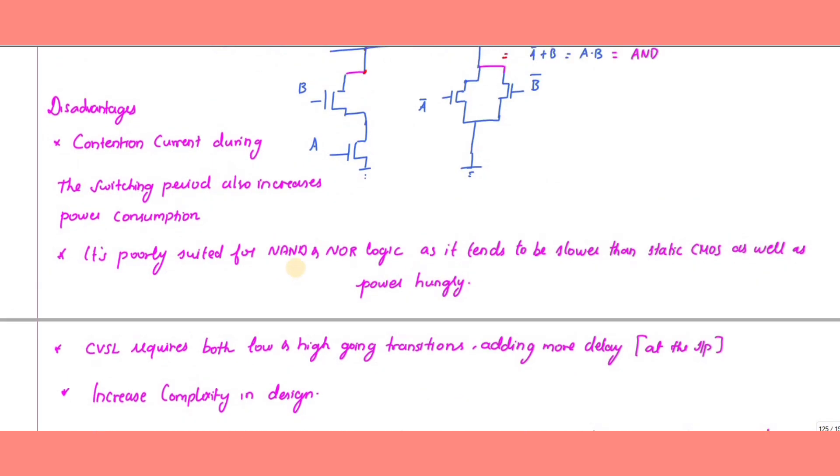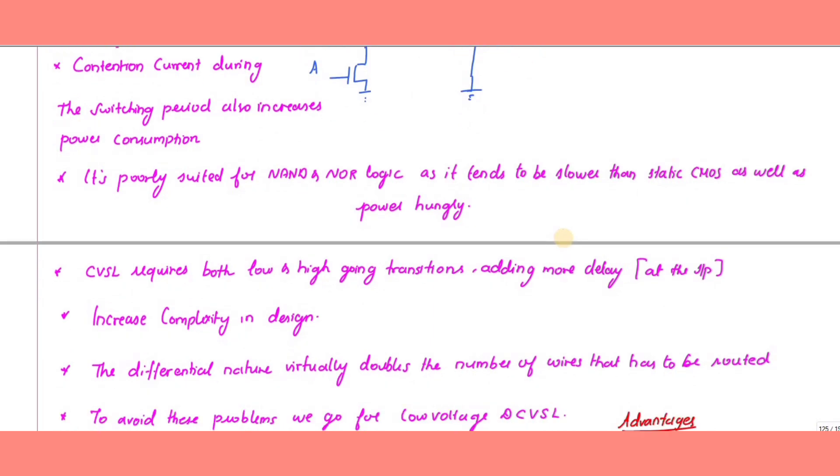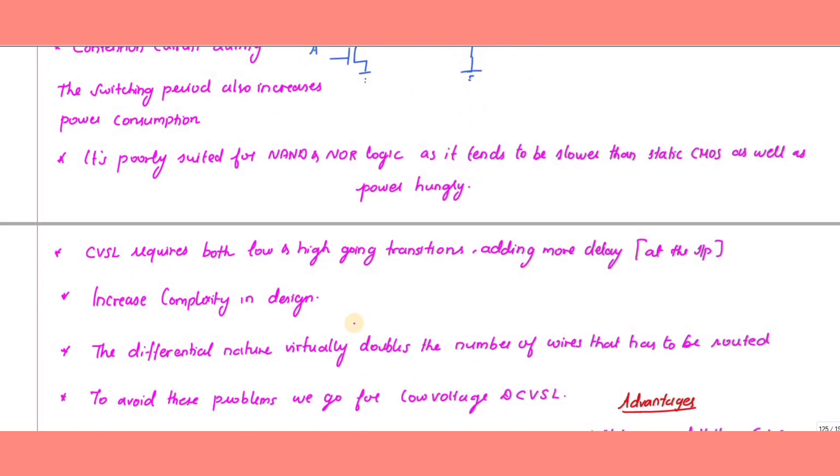Since it requires complementary inputs, if you have A and B, you need A-bar and B-bar, requiring inverters. These inverters add delay at the input for both low and high transitions. The design is complex. Additionally, differential outputs (out and out-bar) virtually double the number of wires that need to be routed.